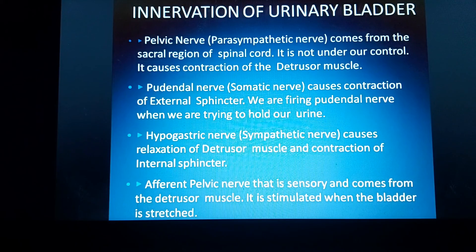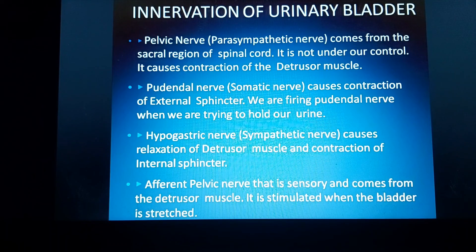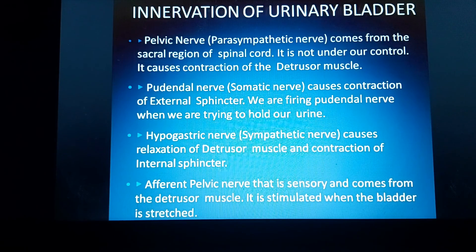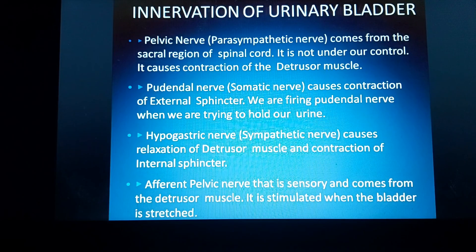Coming to the innervation of the urinary bladder — it is mainly by parasympathetic, somatic, and sympathetic afferent pelvic nerves. The parasympathetic, or pelvic nerve, comes from the sacral region of the spinal cord; it is not under voluntary control and causes contraction of the detrusor muscle. The somatic pudendal nerve causes contraction of the external sphincter when we are trying to hold urine. The sympathetic hypogastric nerve causes relaxation of the detrusor muscle and contraction of the internal sphincter. The afferent pelvic nerve is sensory, comes from the detrusor muscle, and is stimulated when the bladder is stretched.